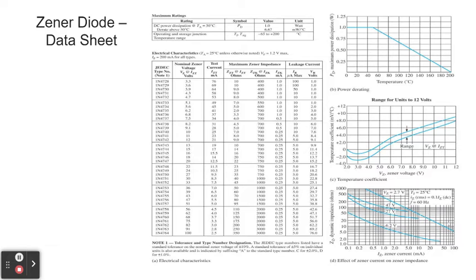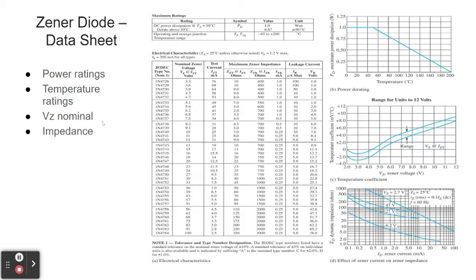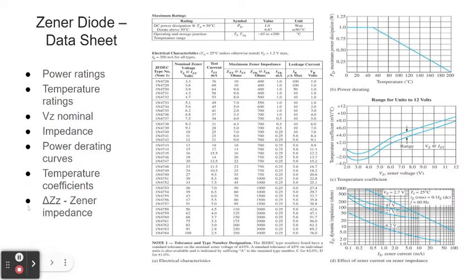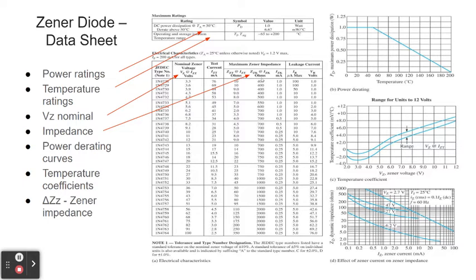This is a Zener diode datasheet where you can find the power ratings, temperature ratings, nominal VZ, impedance, power derating curves, temperature coefficients, and the Zener impedance. At the top you will see the power ratings, temperature ratings, and it's pointed out here the nominal Zener voltage impedance values, ZZT, ZZK, and IZK, which is important.